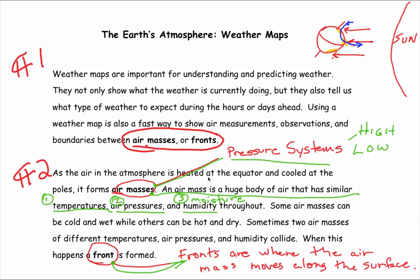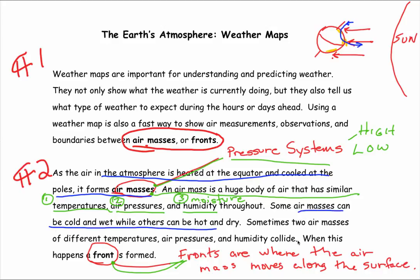With your blue marker, let's get some main ideas. The air in the atmosphere is heated at the equator and cooled at the poles, and it forms air masses. An air mass is a huge body of air. Air masses can be cold and wet, or hot and dry. When air masses of different pressures, humidity, and temperatures collide, they cause fronts. Weather maps are important for understanding and predicting weather.